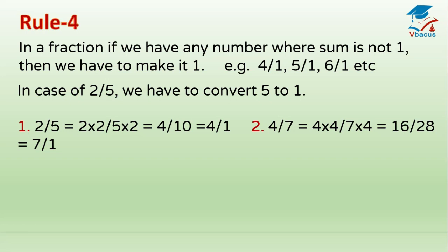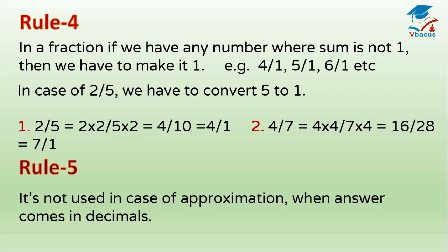So 2 times 2 over 5 times 2 becomes 4 over 10, which gives 4 over 1. In the second case, 4 over 7: multiply numerator and denominator both by 4 to get 16 over 28. Then 1 plus 6 equals 7, and 2 plus 8 equals 10, giving 1 plus 0 equals 1, so the result is 7 over 1. Rule 5: It is not used in cases of approximation when the answer comes in decimals.